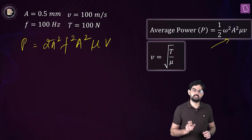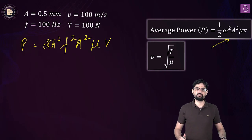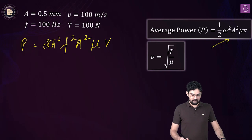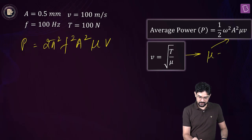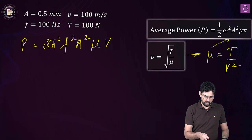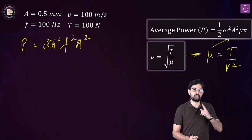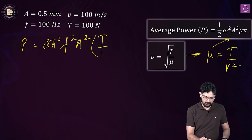The value of the linear mass density is not given. Therefore we can substitute mu from the relation mu equals T divided by v squared. Now if you put mu as T by v squared, then T by v squared into v will become just T by v.